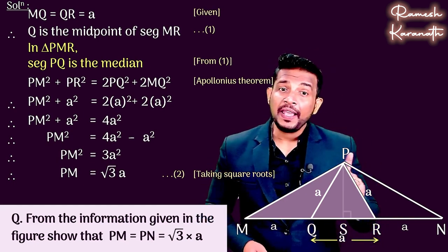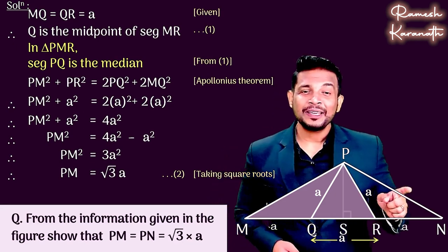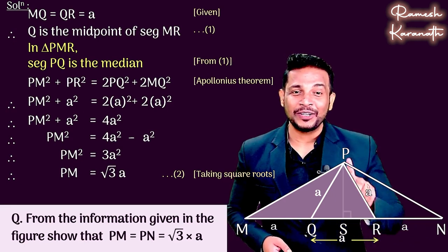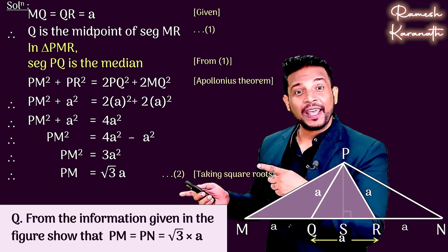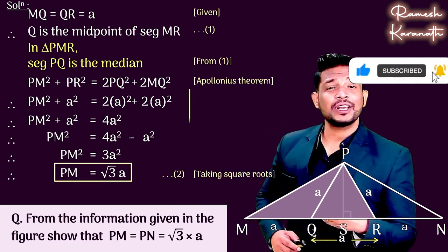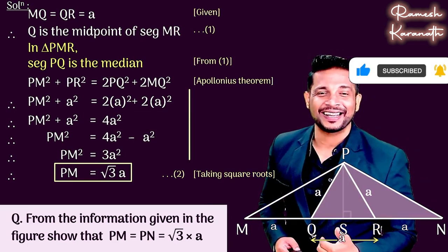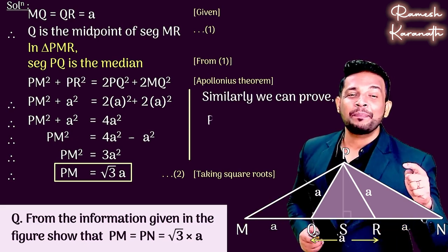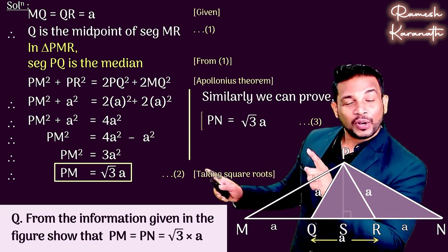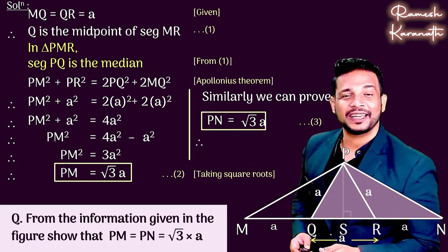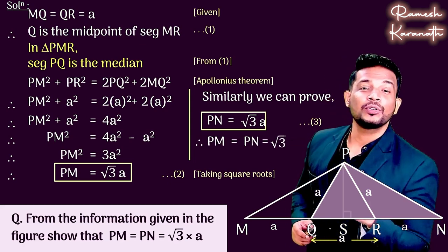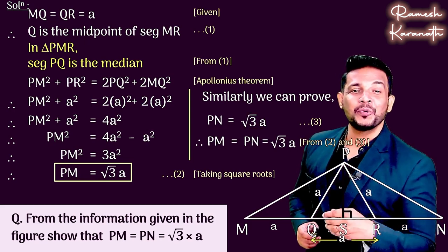Now we need to find PN's value. N is the midpoint of QR, so we will consider triangle PQN. Same apply and we will have PN's value. Similarly, we will get that PN's value is root 3 into a. That is our result number three. Now look at result number two and result number three. PN as well as PM, both are equal and both are root 3 into a.